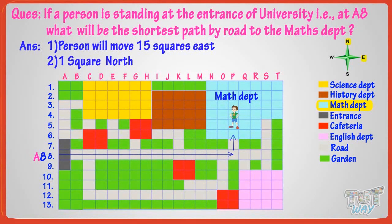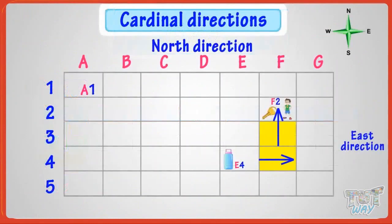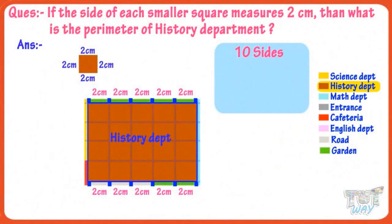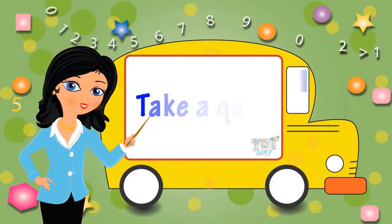So kids, now you know what are grids, what are columns and rows, how to name locations in a grid, what are cardinal directions, and also how to find area and parameter in case of simple grids. Now go ahead and take a quiz to learn more. Bye-bye!